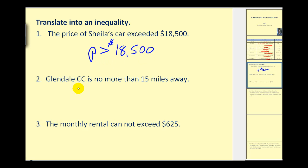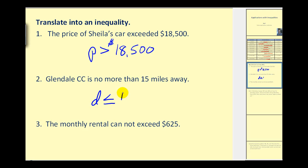Number two: Glendale Community College is no more than 15 miles away. So the distance D is no more than 15 miles away, meaning it could be less than or equal to 15 miles.